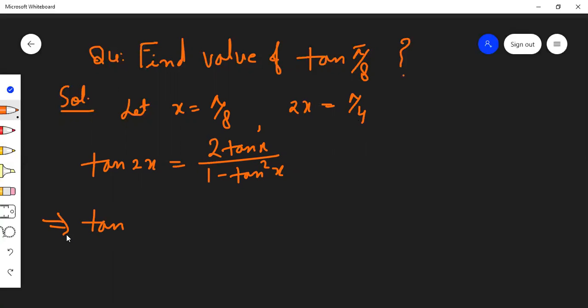This implies tan(π/4) equals 2tan(π/8) divided by 1 minus tan²(π/8). In place of x, I substituted π/8. In place of 2x, π/4.